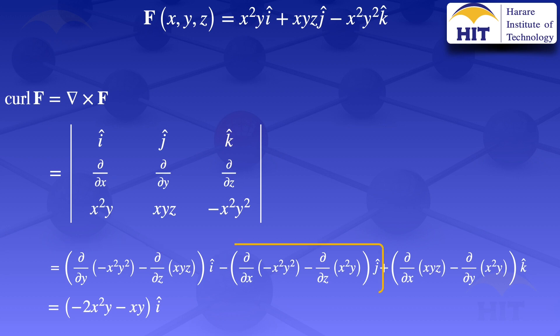Moving on to the ĵ component: the partial derivative with respect to x of −x²y² is −2xy². The partial derivative with respect to z of x²y is 0, since x and y are treated as constants. So for that part we get minus [−2xy² − 0]ĵ, which simplifies to 2xy²ĵ.